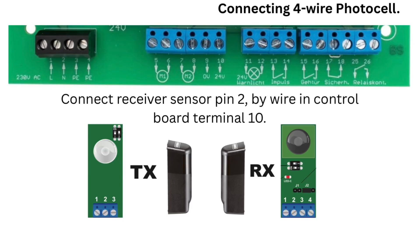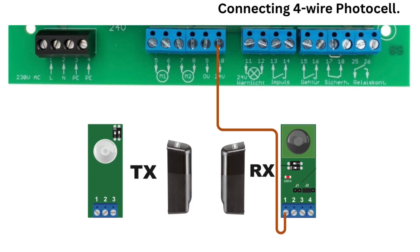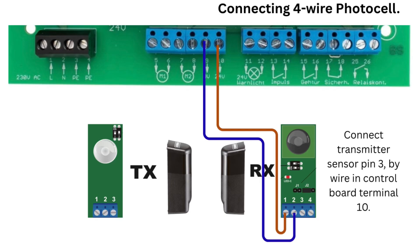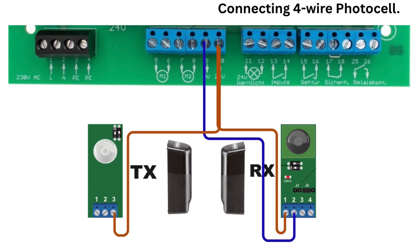Connect receiver sensor pin 2 by wire in control board terminal 10. Terminal 10 is plus 24 volt DC power supply output. Connect receiver sensor pin 1 by wire in control board terminal 9. Terminal 9 is negative 24 volt power supply output. Connect transmitter sensor pin 3 by wire in control board terminal 10. Connect transmitter sensor pin 1 by wire in control board terminal 9. Transmitter and receiver photocell power supply connection done.